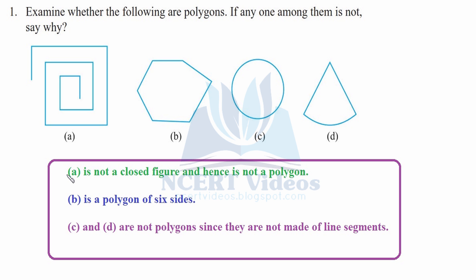In order to have a polygon it must be a closed figure. This figure contradicts that definition, therefore it is not a polygon. For part B, you can see it is made up of six line segments and it is closed, therefore it is a hexagon and it is a polygon since it is a closed figure.